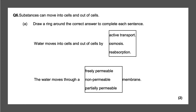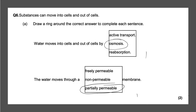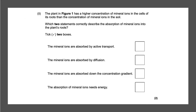Next question: substances can move into and out of cells — draw a ring around the correct answer to complete each sentence. Water moves into and out of cells by osmosis, which is the diffusion of water. The water moves through a partially permeable membrane — it's a membrane with small holes in it — and having those two correct answers will give you your two marks.